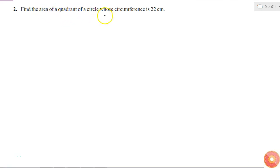Find the area of a quadrant of a circle whose circumference is 22 cm. So first of all I am given the circumference. So I will try to get my radius from this.